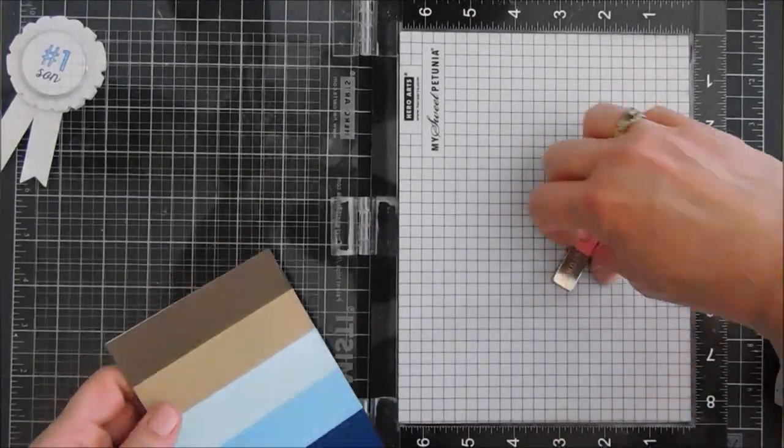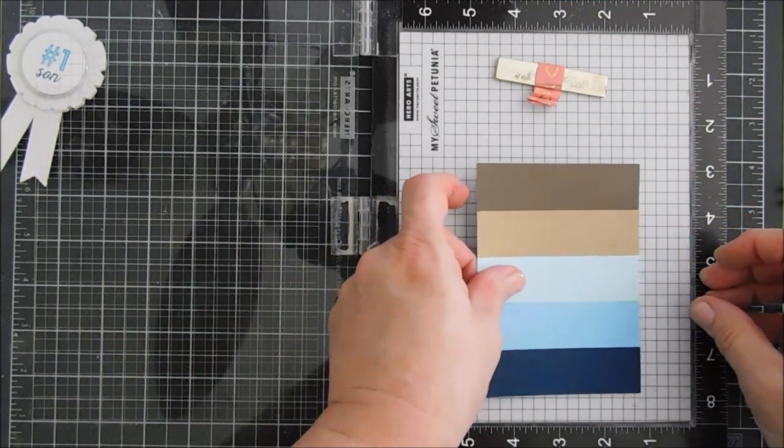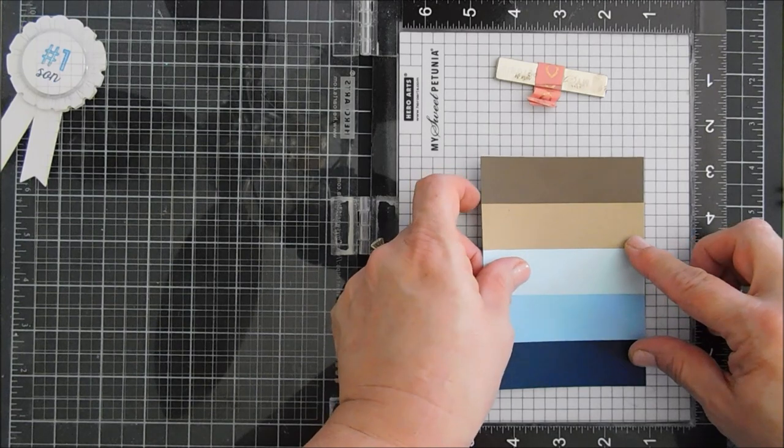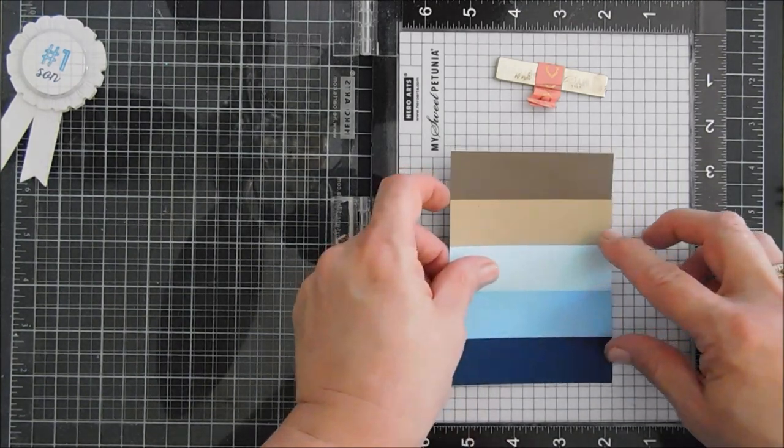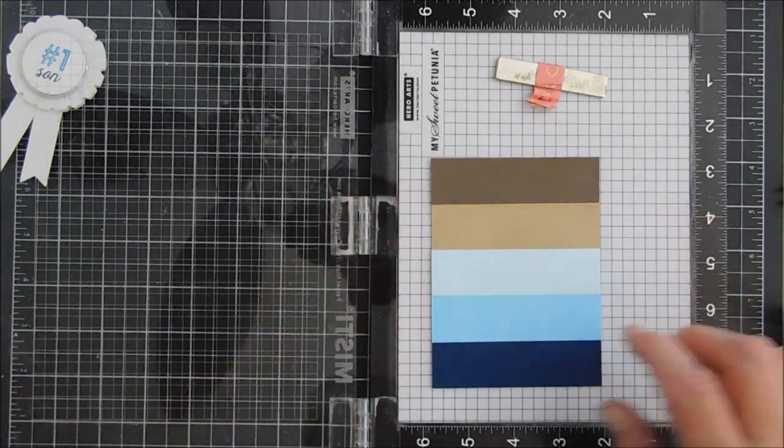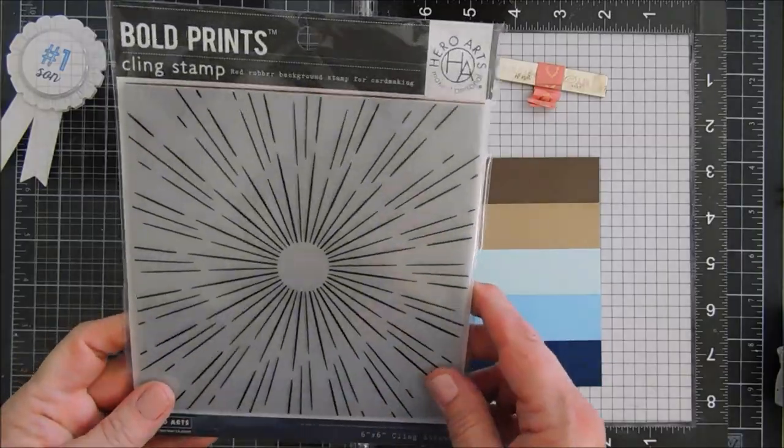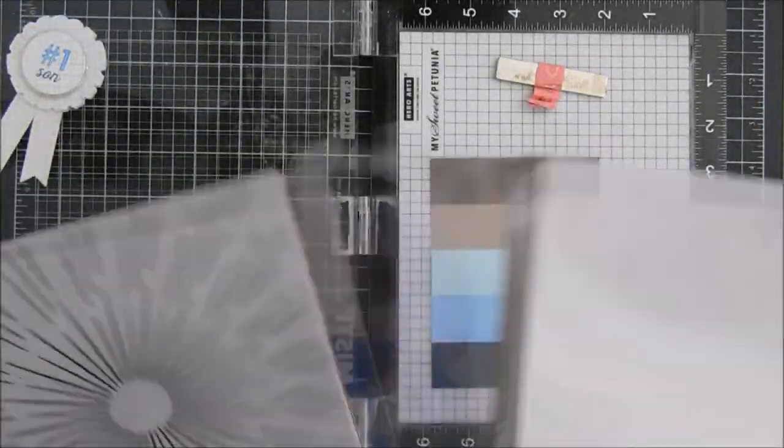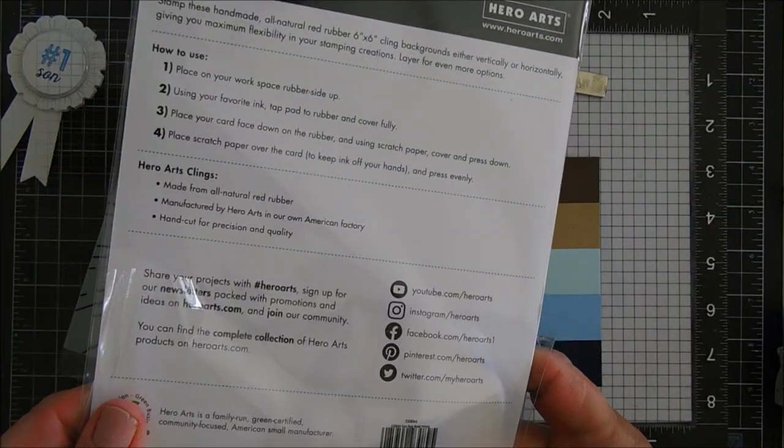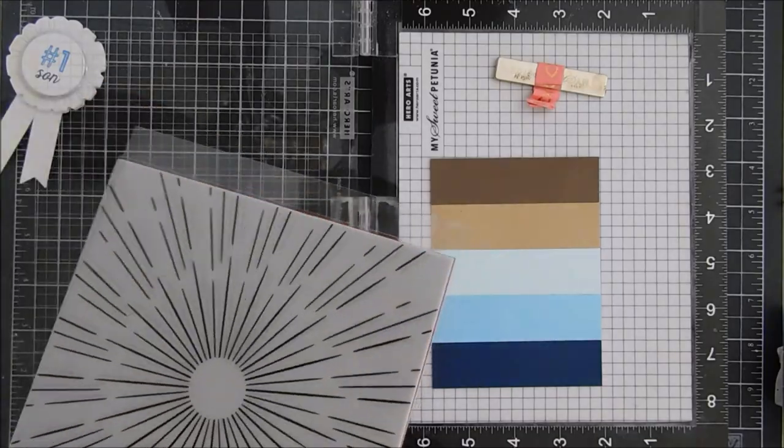Once we trimmed it, we're going to bring back our larger MISTI this time. We're going to tack this down inside and then we're going to do a little bit of heat embossing on our panel. I'm kind of playing around with my placement. The background stamp that I'm using is from Hero Arts. It's called the Sun Ray Bold Print.